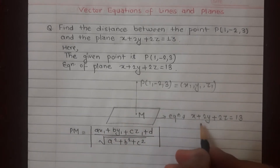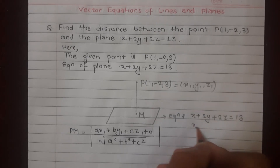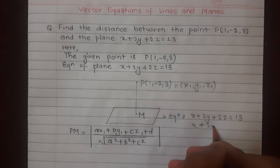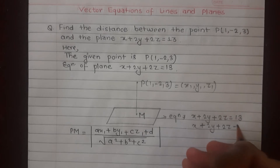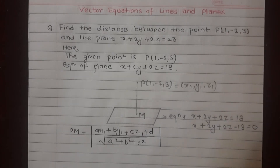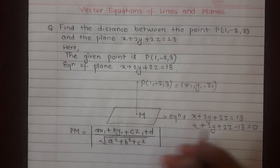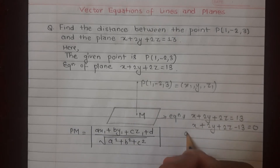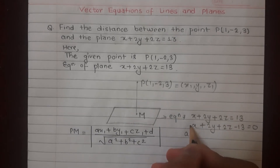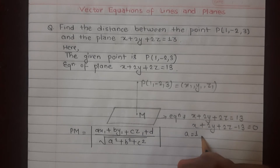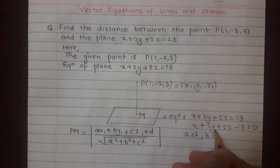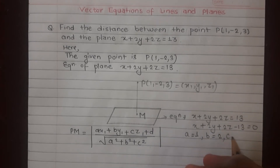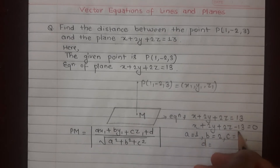I will identify the coefficients from the plane equation. A will be the x coefficient: 1. Then b will be the y coefficient: 2. C will be the z coefficient: 2. And d will be the constant: minus 13.